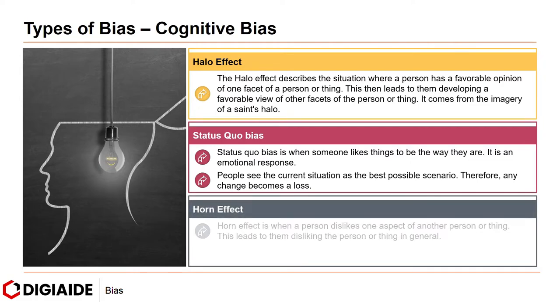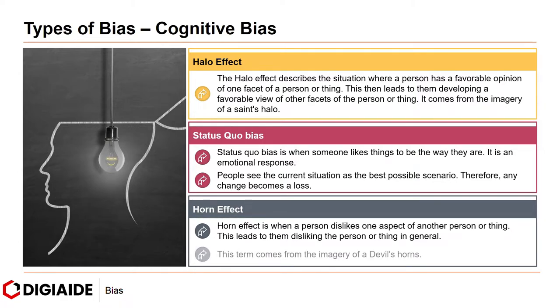And finally, the horn effect. The horn effect is when a person dislikes one aspect of another person or thing, which leads them to dislike the person or thing in general. This term comes from the imagery of a devil's horns.